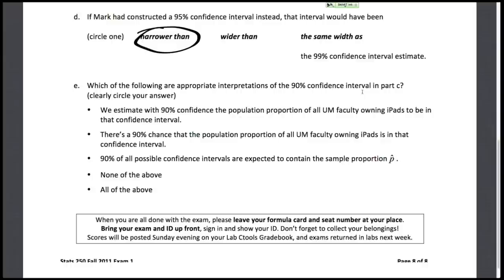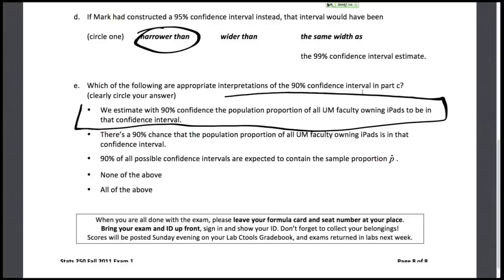Lastly, we have this interpretation question. The first option — we estimate with 90% confidence the population proportion of all UM faculty owning iPads to be in that confidence interval — is a good, textbook explanation of what a confidence interval is, so that one's correct. The second option — there's a 90% chance that the population proportion is in that interval — is incorrect; there's no probability involved, it's either in there or not. The third option — 90% of all possible confidence intervals are expected to contain the sample proportion p-hat — is also not a good interpretation, because that doesn't necessarily hold across many strange extreme intervals.